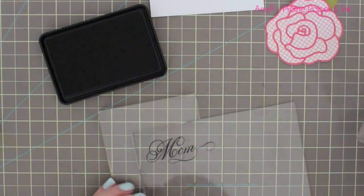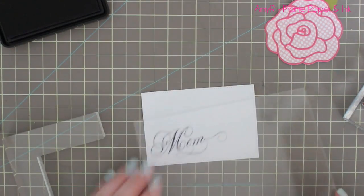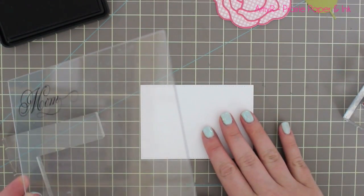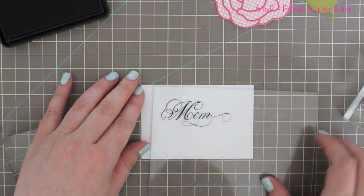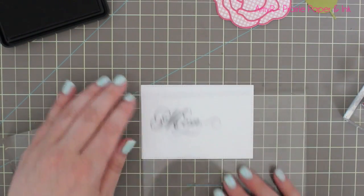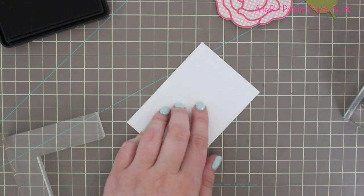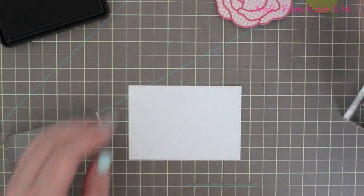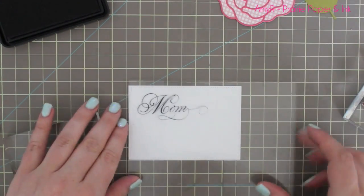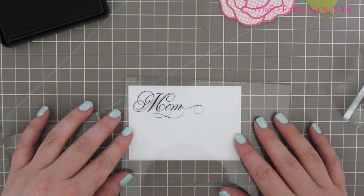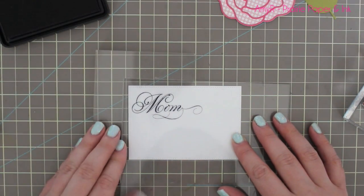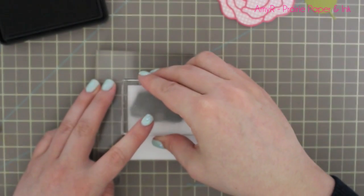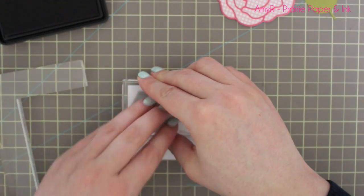I'm inking up this scripty mom stamp and getting it lined up here on the rectangle where I want it. Since the whole stamp positioner covers this piece of cardstock and there's nothing holding it in place, I grabbed the tiniest amount of my ATG adhesive—a really small amount because if you put too much on here you're not going to be able to get it up off your craft sheet without it tearing—just enough to hold it in place so it doesn't move around.